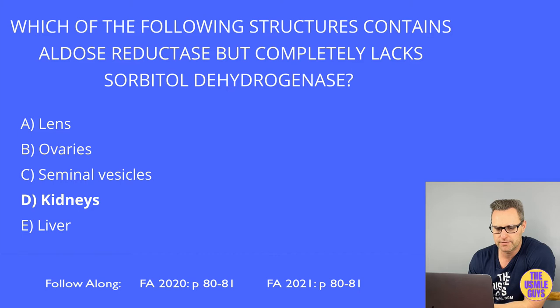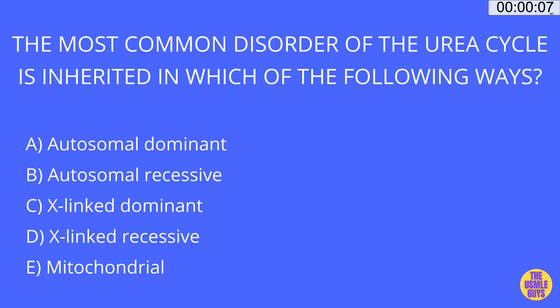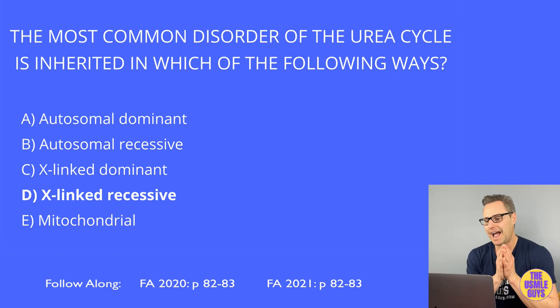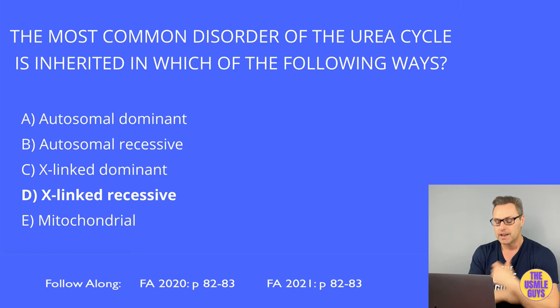The correct answer here is D. When it comes to the urea cycle, remember it happens in both the mitochondria and the cytoplasm. The rate-limiting step involves the carbamoyl phosphate synthetase 1 enzyme, activated by N-acetylglutamate, and this specific rate-limiting step happens in the mitochondria.